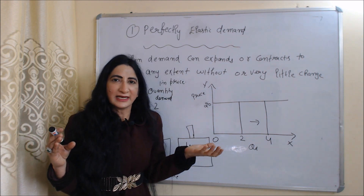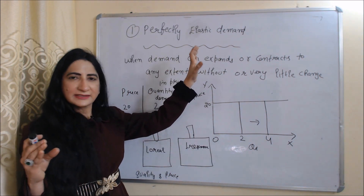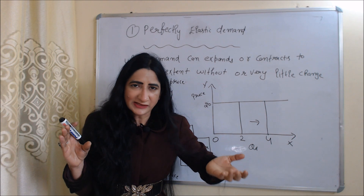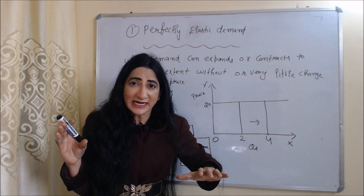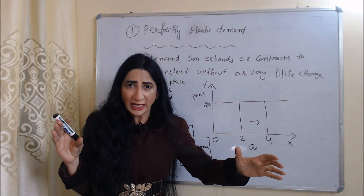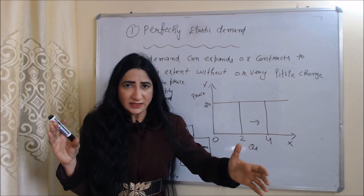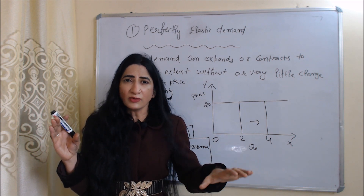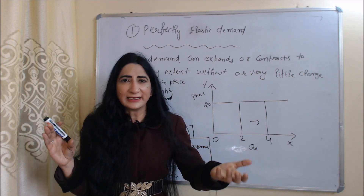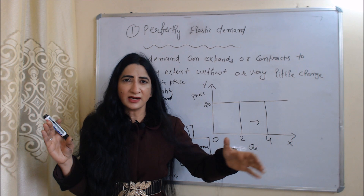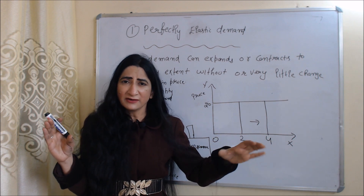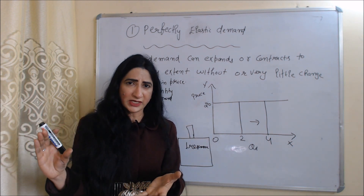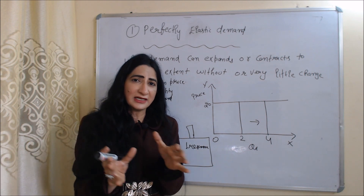The first type of price elasticity of demand is perfectly elastic demand. Perfectly elastic demand means when your demand expands or contracts to any extent without or with very little change in price. In this case, our demand can change to any extent without or with very little change in price. That is why the price will remain constant or will change only a little bit, but demand can change to any extent.